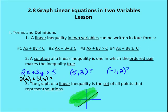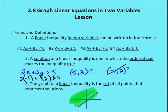The next question asks if (-1, 2) is a solution. I plug in -1 for X and 2 for Y: 2 times -1 plus 3 times 2 gives -2 plus 6, which equals 4. That is not greater than 5, so (-1, 2) is not a solution. So (5, 3) is a solution, but (-1, 2) is not.